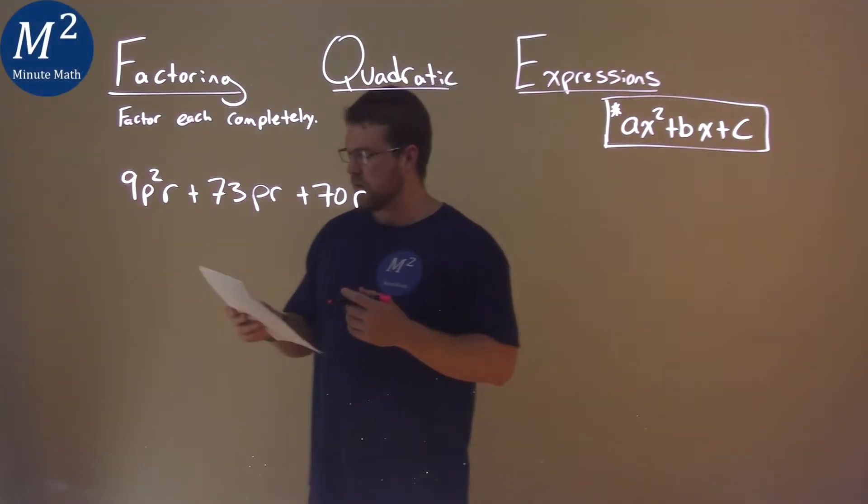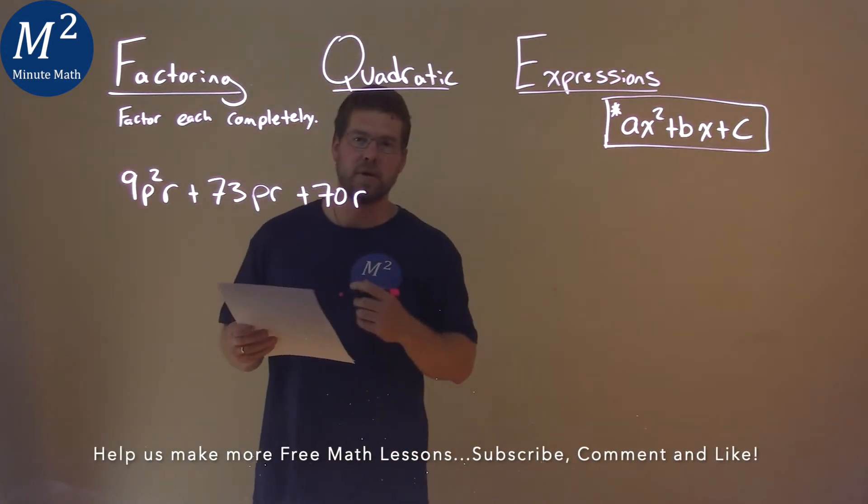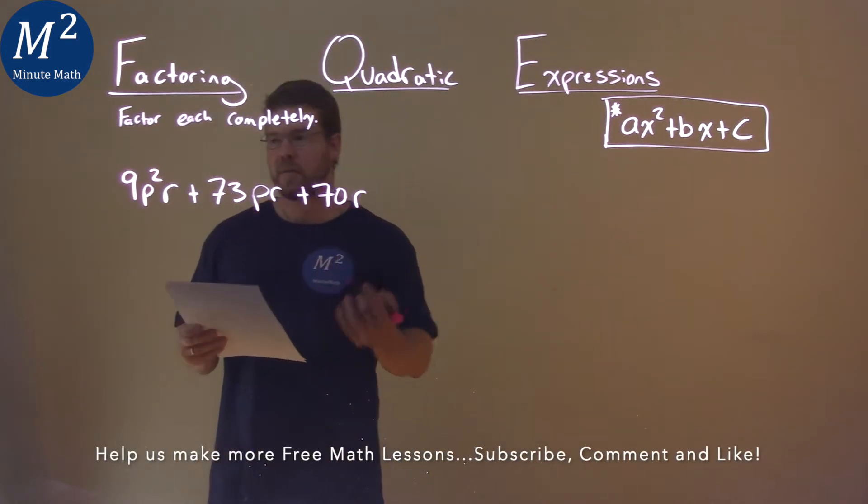We're given this problem: 9p²r + 73pr + 70r, and we want to factor this completely.